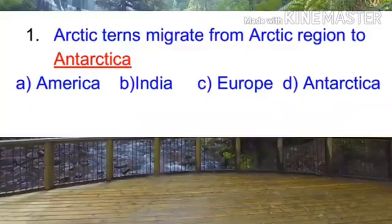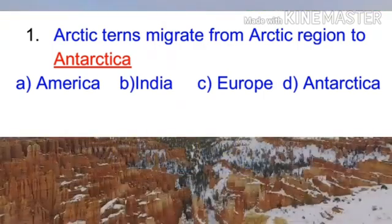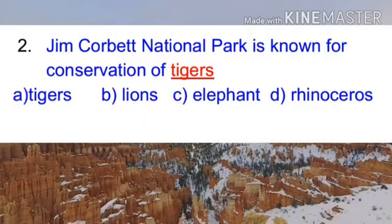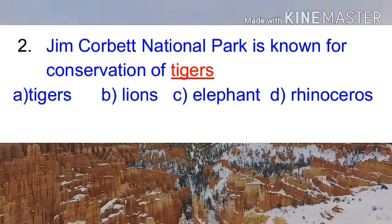Number five: Arctic terns migrate from the Arctic region to Antarctica. MCQ number two: Jim Corbett National Park is known for conservation of — and the answer is tigers.